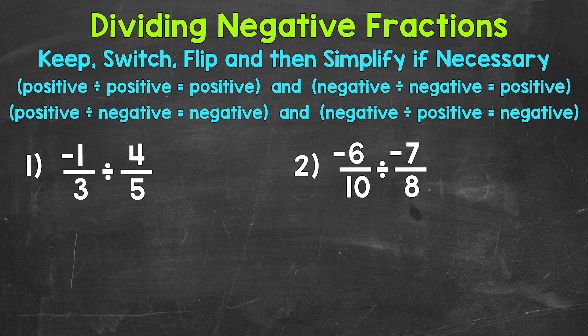Now the same rules that apply to dividing positive and negative integers apply to fractions. So if we have the same sign, meaning positive divided by a positive or a negative divided by a negative, we will get a positive result. If we have different signs, so a positive divided by a negative or a negative divided by a positive, we will have a negative result.